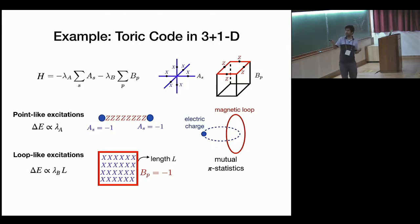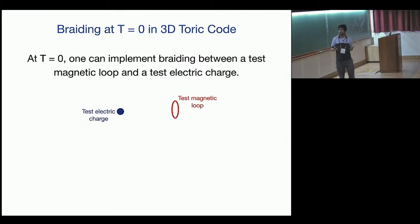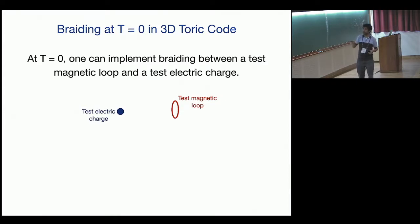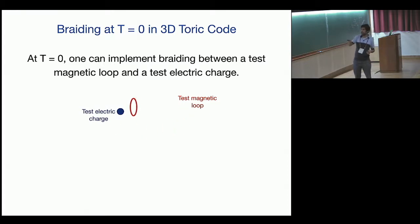There is a braiding between loops and charges: if you take a charge around a loop, it gets a minus-one sign. This braiding is well-defined at zero temperature. In the vacuum there are no excitations, so you can create test particles—a test electric charge and a test magnetic loop—and there is a well-defined braiding in the ground state.